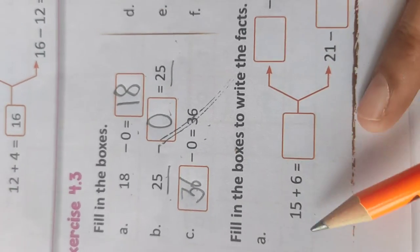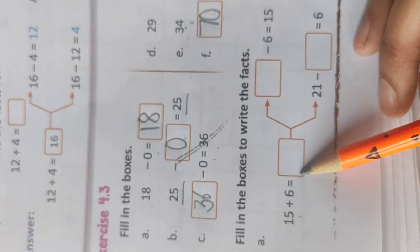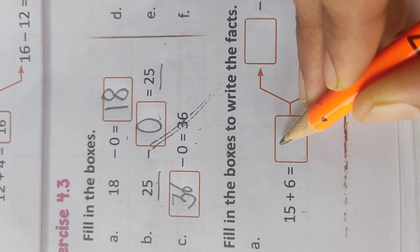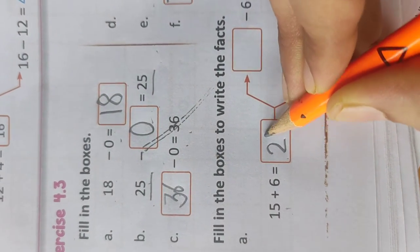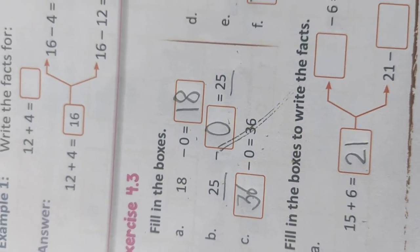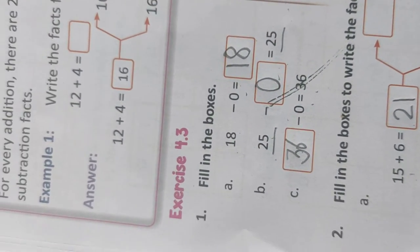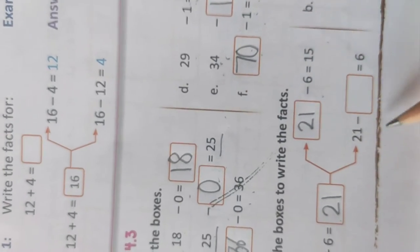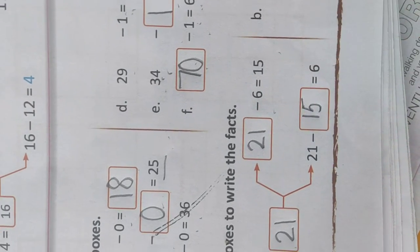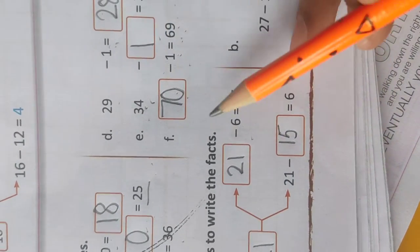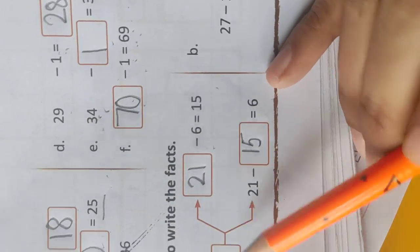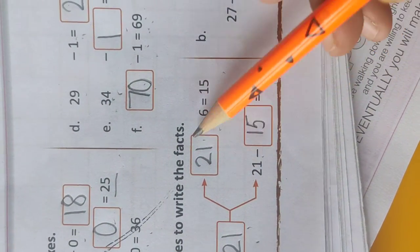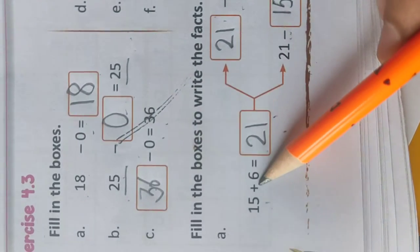Next is, we are given with 15 plus 6. First of all, we will do the addition in mind. 15 plus 6 will give me 21. Now, I will write it in the subtraction ways. 21 minus 6 will give me 15, and 21 minus 15 will give me 6. Numbers ko ulat pulat kar likh rahe hain. So what will happen? The answer is 21. Every time we will subtract the given numbers from that answer.